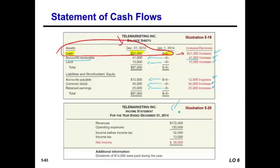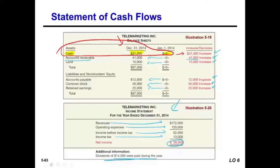From the income statement: revenues were $172,000, operating expenses $120,000, income before taxes $52,000, income tax $13,000, and net income $39,000. Dividends paid for the year were $14,000.